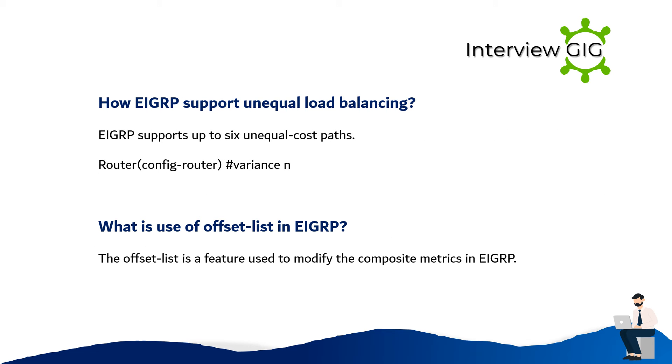How does EIGRP support unequal load balancing? EIGRP supports up to six unequal-cost paths. Router# variance N.